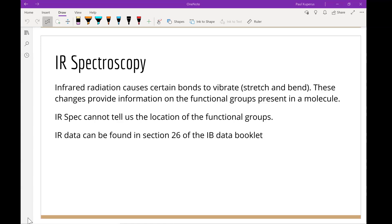IR spectroscopy uses infrared radiation that causes bonds to bend and stretch, but it doesn't actually break any bonds because there isn't enough energy. These changes provide information on the functional groups that are present in the molecule. The IR spec does not actually tell us where the functional groups are located.